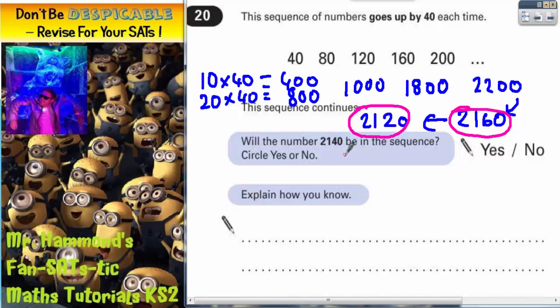But 2,140 would come between them two. So actually, 2,140 will be skipped out. So the answer is no. 2,140 will not be in the sequence.